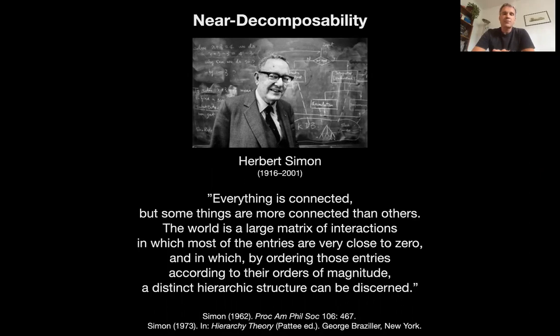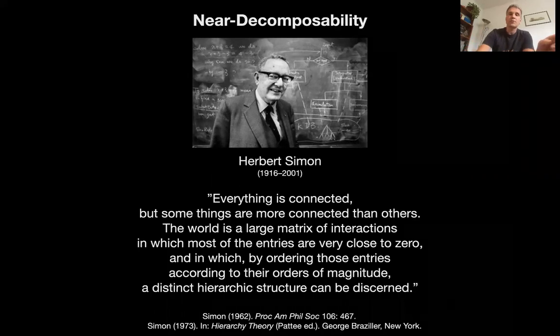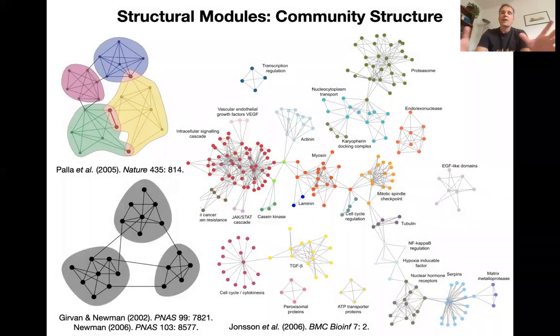The world is a large matrix of interactions in which most of the entries are very close to zero and in which, by ordering those entities according to their orders of magnitude, a distinct hierarchy structure can be discerned. And in this structure, we arrived at a little bit last time is this fact that systems, biological complex adaptive systems, they're modular.